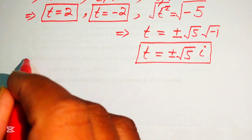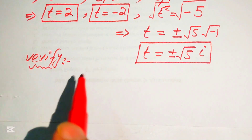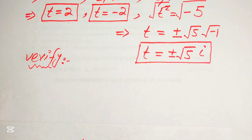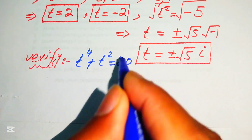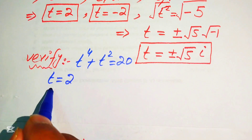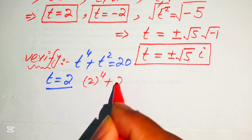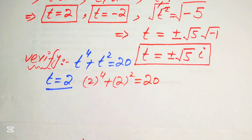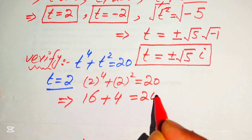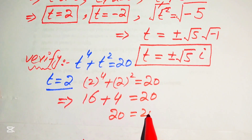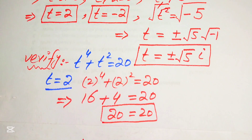Now we verify these roots. We copy the given equation: t to the power of 4 plus t squared equals 20. Substituting t equals 2: 2 to the power of 4 plus 2 squared equals 16 plus 4 equals 20. This equals 20, so t equals 2 satisfies the given equation.